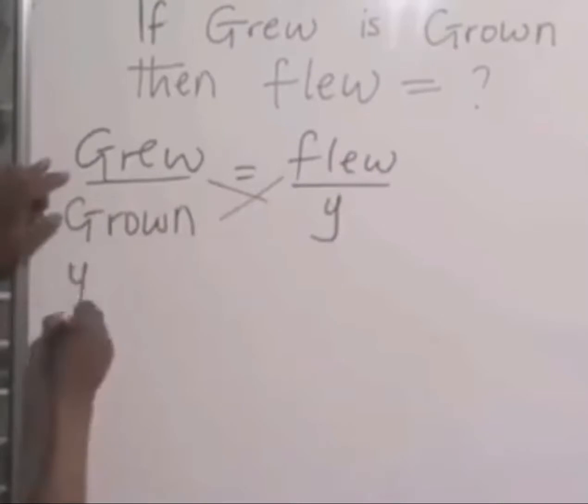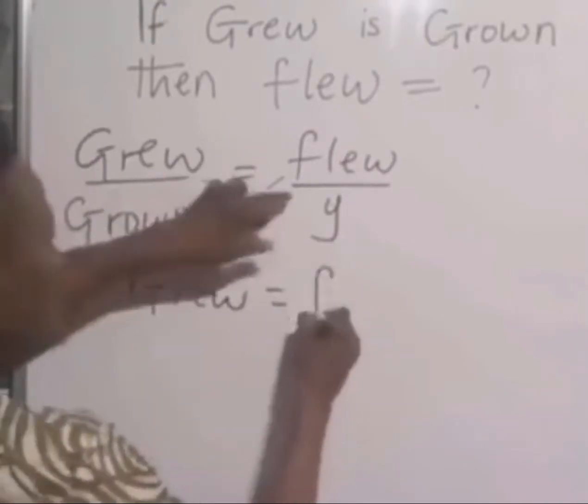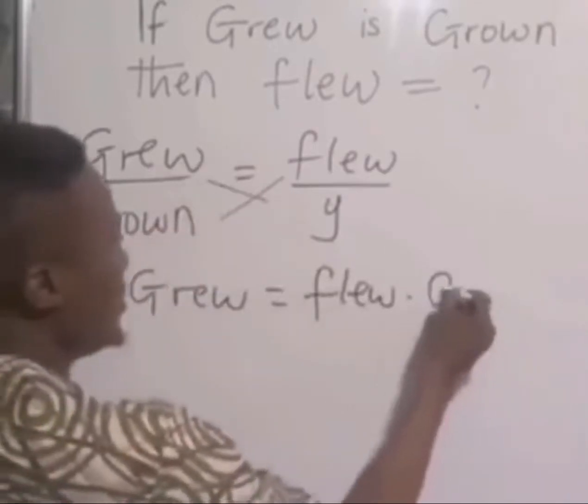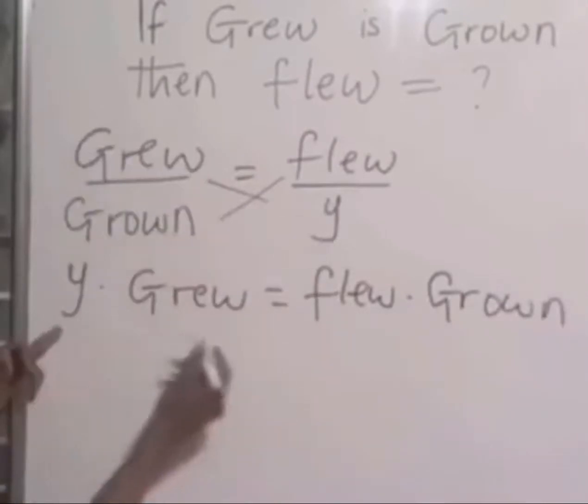y times grew equals flew times grown. That is cross-multiply. So to get your y, divide both sides by grew.